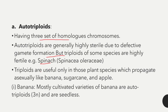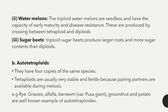Triploids are useful only in those plant species which propagate asexually, like banana, sugarcane, and apple. Most cultivated varieties of banana are autotriploids and are seedless in nature. Triploid watermelons are seedless and have the capacity of early maturity and disease resistance; these are produced by crossing between tetraploid and diploid.